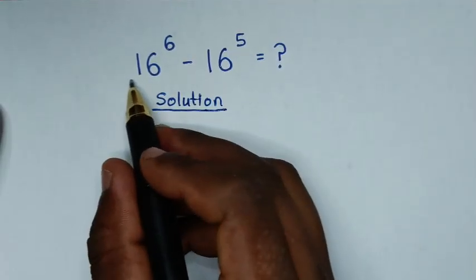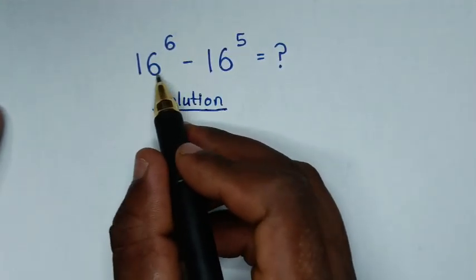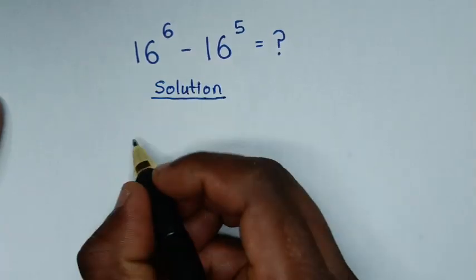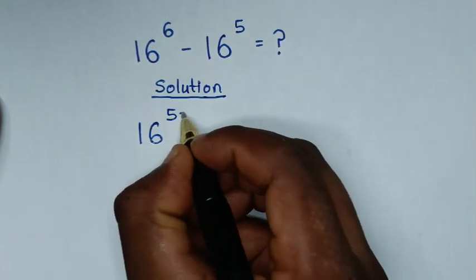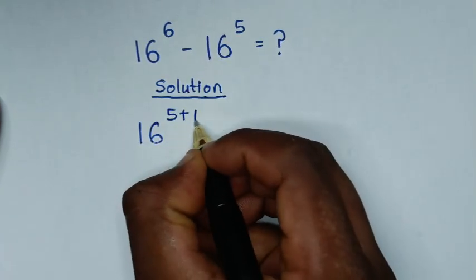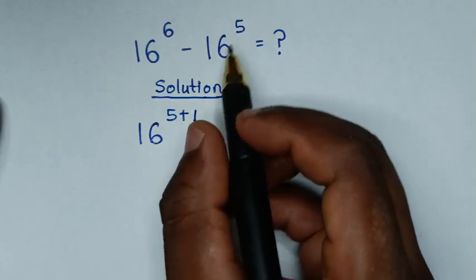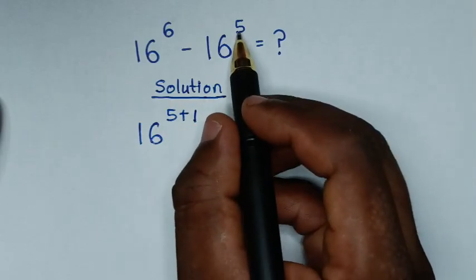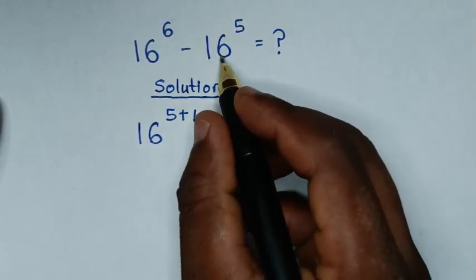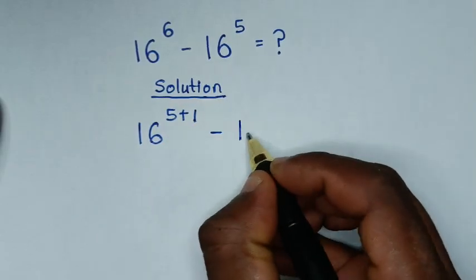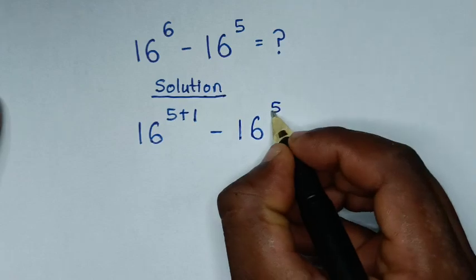From this, we rewrite the problem: 16 power of 6 is the same as 16 power of 5 plus 1, then minus 16 power of 5.